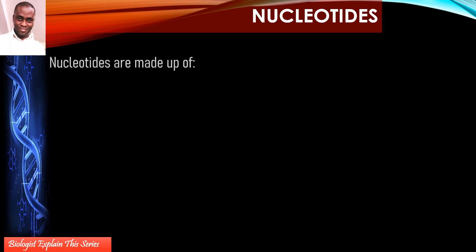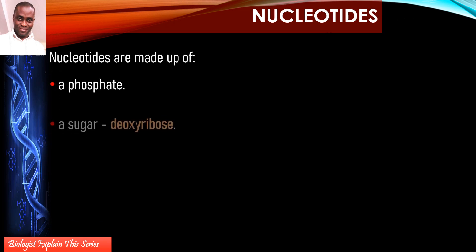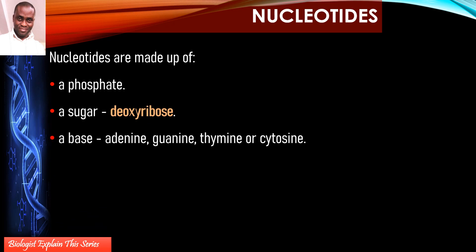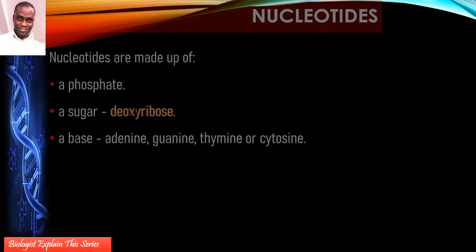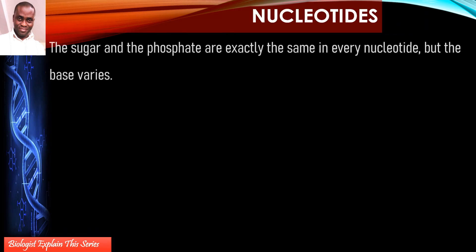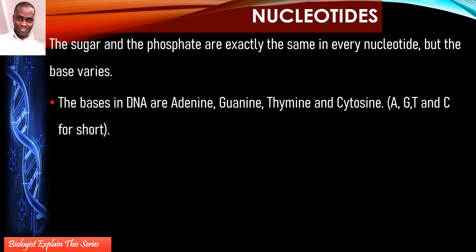The sugar phosphates tend to be the same in all organisms. The strands or chains of every DNA molecule have a fixed sugar and a fixed phosphate. There is only one type of deoxyribose sugar, and the phosphate is of only one type.